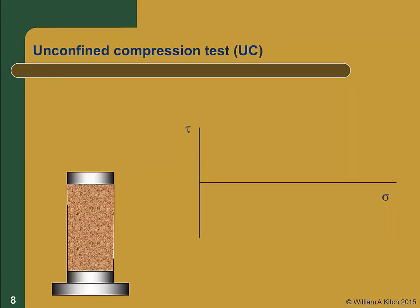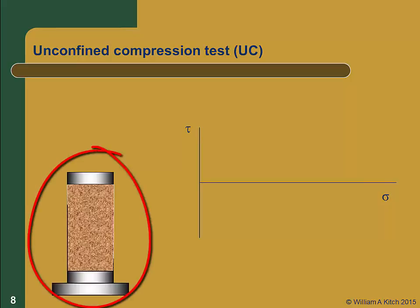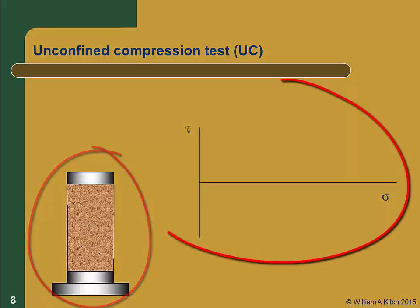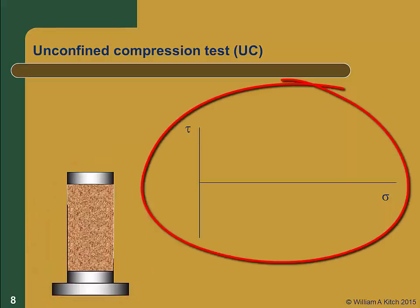In the next part of this webcast, we will examine the stress paths followed in each of the four tests we just discussed. In each case, we'll present a schematic of the specimen on the left side showing the boundary conditions and the applied stress. On the right, we'll draw the Mohr circles for the test, plot the failure envelope, and determine the strength parameters phi and c.